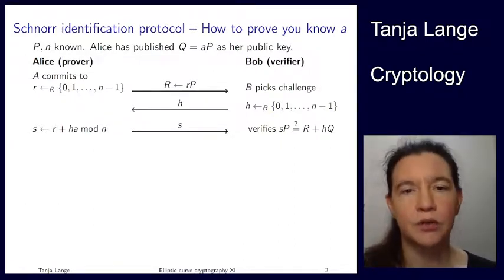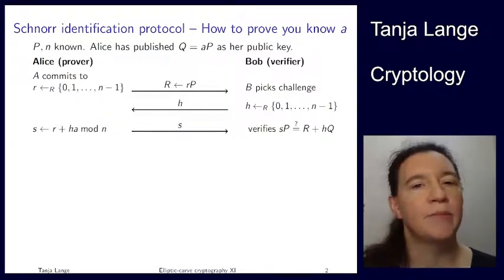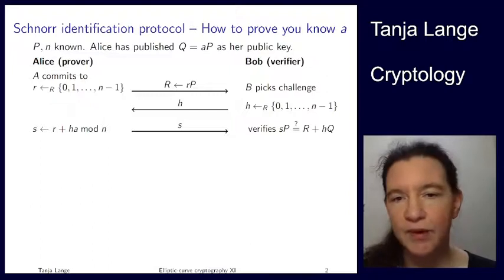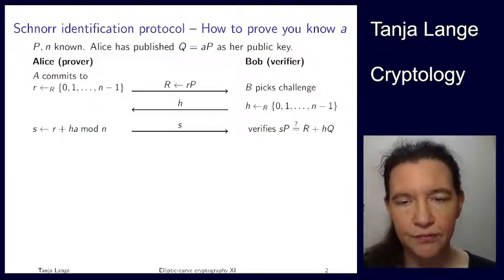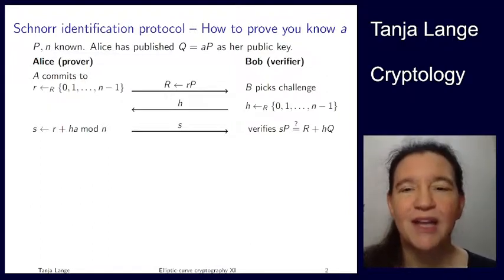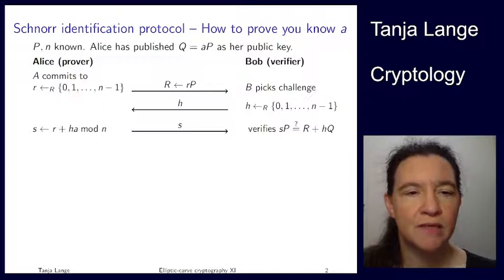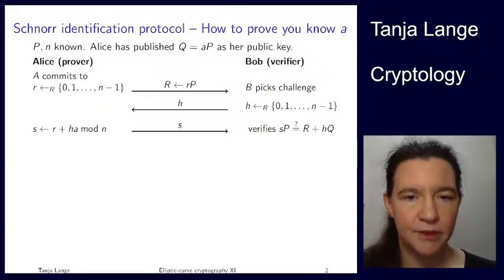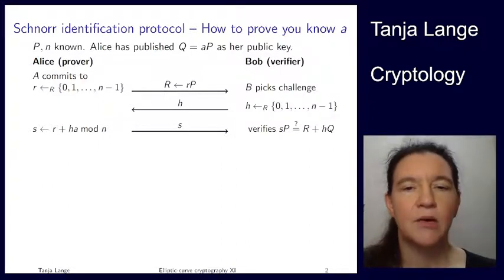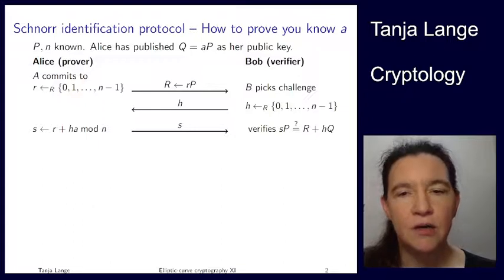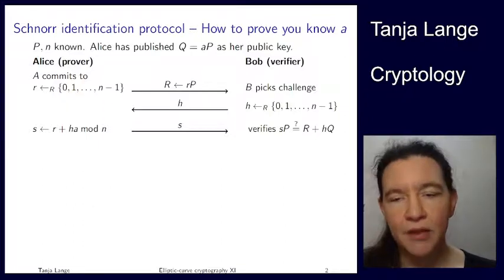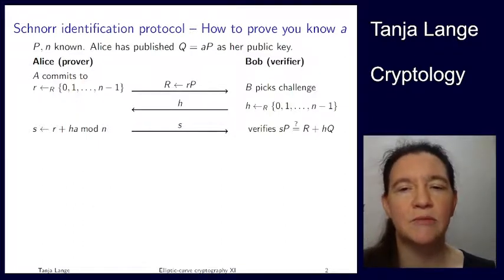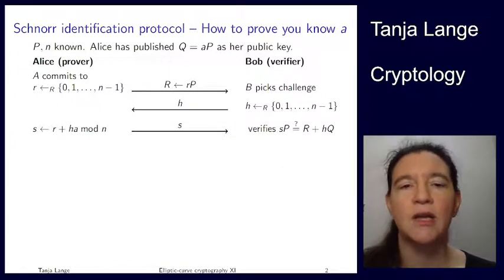P and Q are the elliptic curve points, and it might be an Edwards curve, might be Bernstein-Strassel. What Alice is doing is she picks a random scalar r, and she computes R times P — that is capital R. She sends this capital R over to Bob, and then Bob similarly picks a random challenge h from the same set.